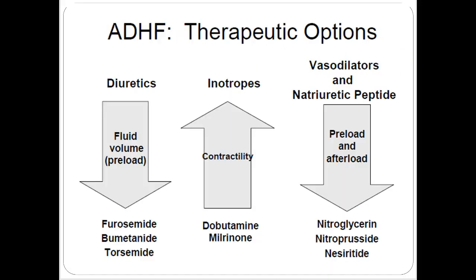Therapeutic options really come down to a few things. Diuretics are an obvious choice for a congested patient — we've already talked about those. Inotropes can be used to improve contractility; we talked about dobutamine, and we'll discuss milrinone in more detail. Vasodilators and natriuretic peptides can decrease preload and afterload, helping with acute symptomatic relief of heart failure exacerbations.